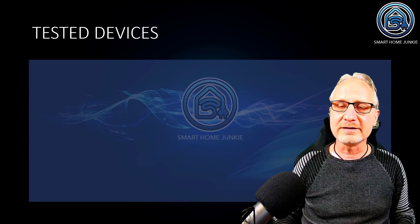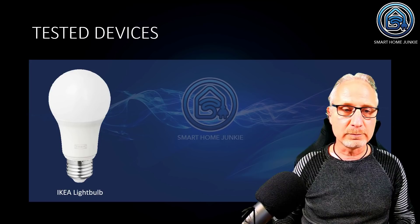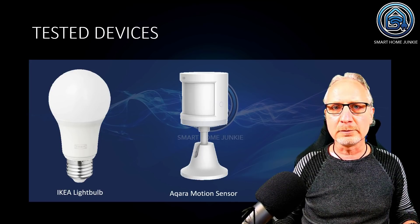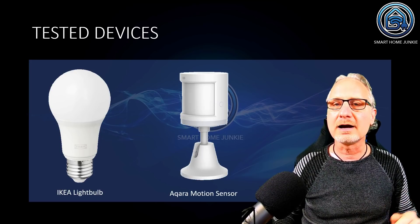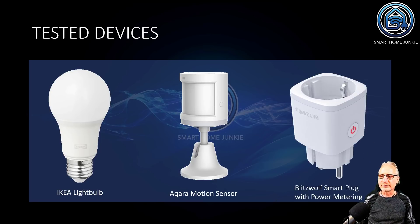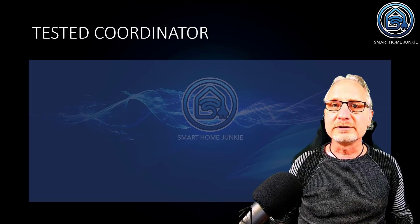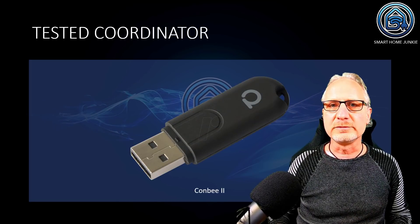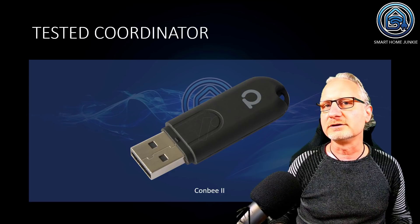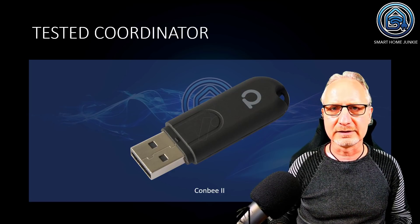The devices that I tested during this whole process were three. One is the IKEA color light bulb. The second one is the popular Aqara motion sensor. And the third one is the Blitzwolf smart plug with power metering. If you want to order one of those, the links are in the description below. The coordinator that I used is the COMBI2 stick — that's the only one I have, but you can also use other coordinators.